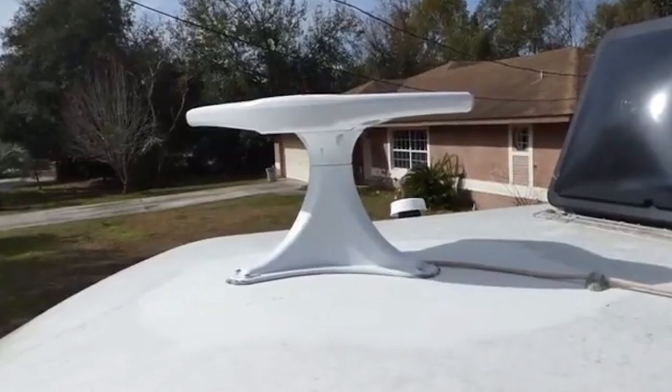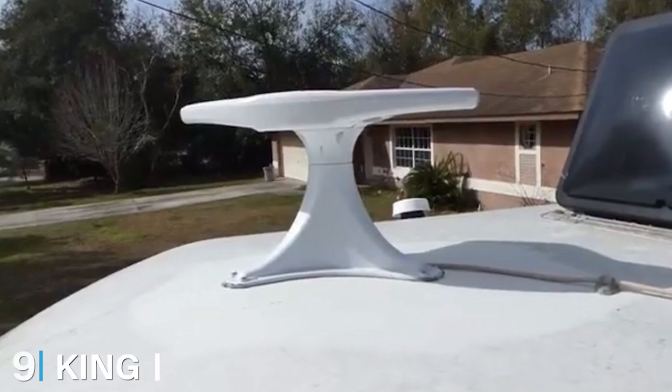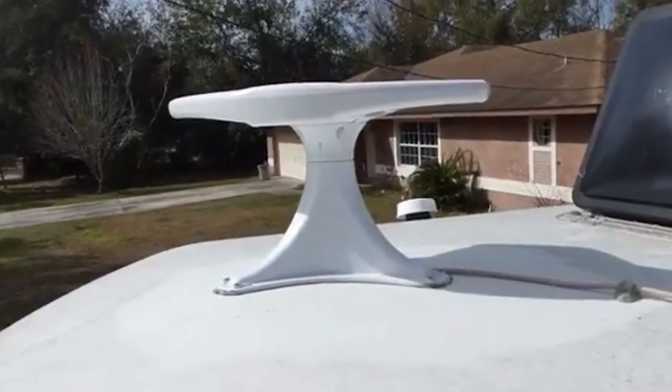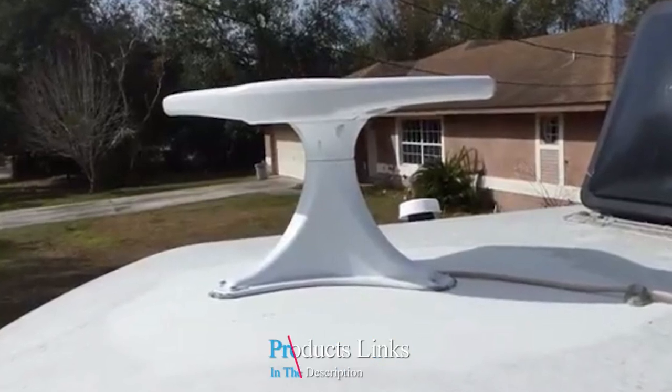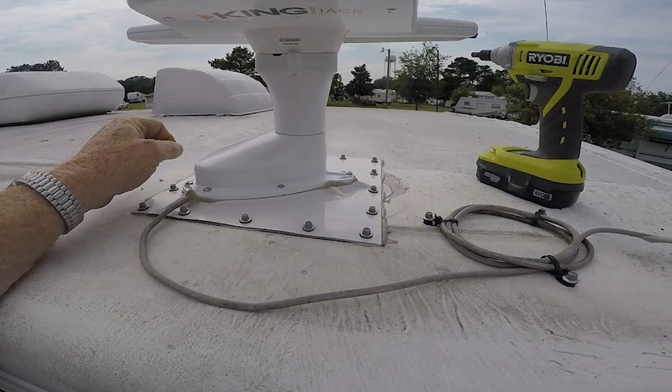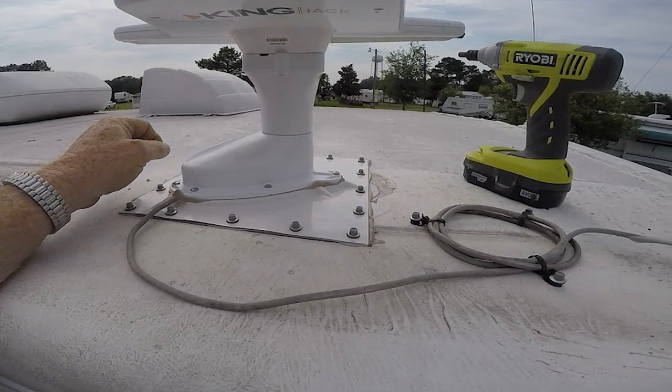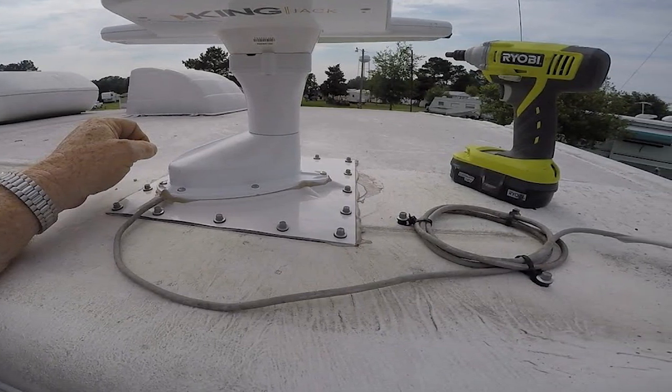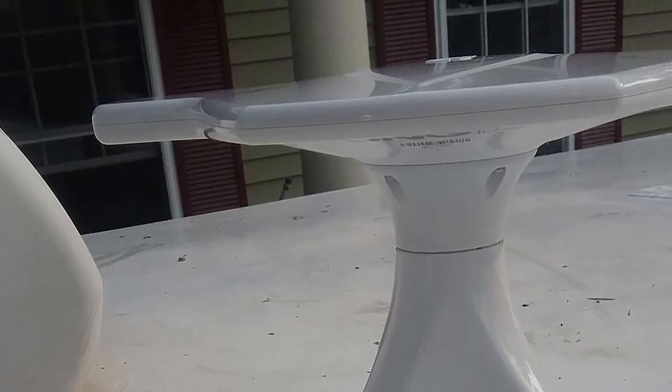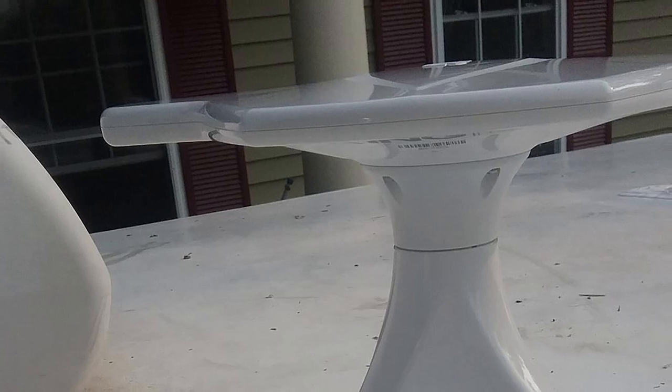Next at number nine we have King OA8500 Jack Over-the-Air Antenna. The King OA8500 is a long-range over-the-air RV TV antenna. It picks up both UHF and VHF channels and rotates 360 degrees. The compact size makes it 70% smaller than a typical RV antenna.